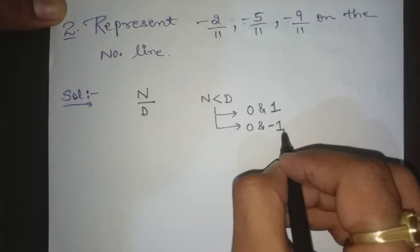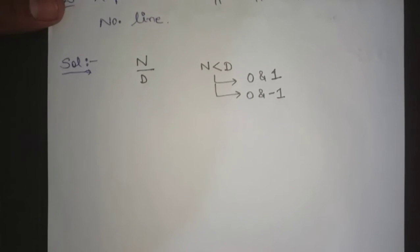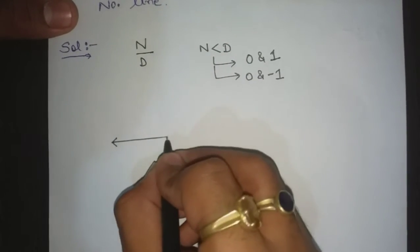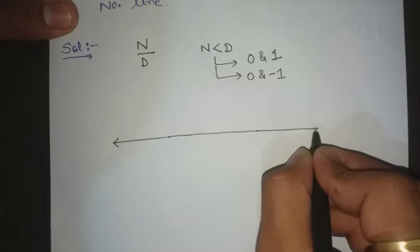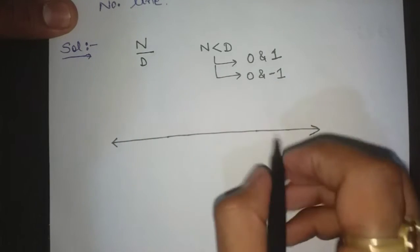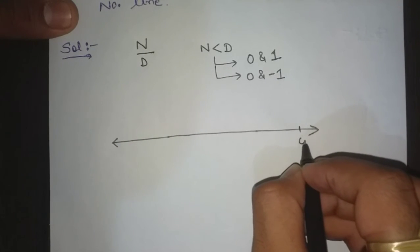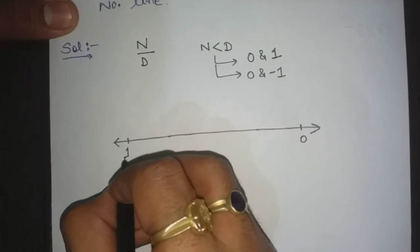So we have to create a number line. We have to draw a number line between 0 and minus 1.